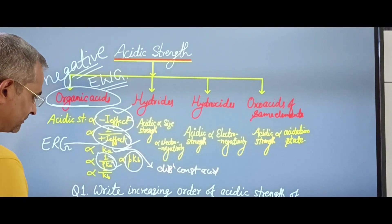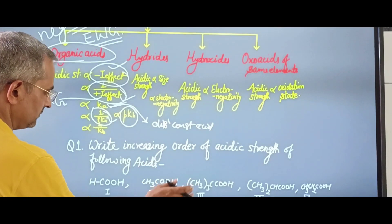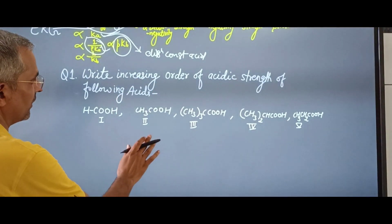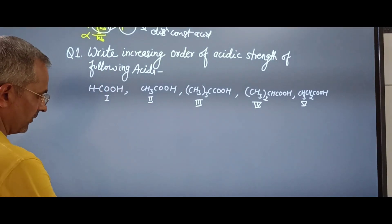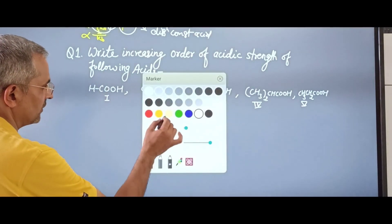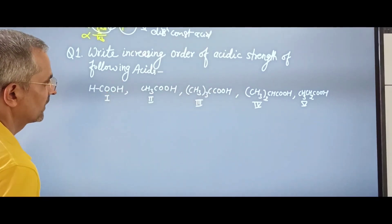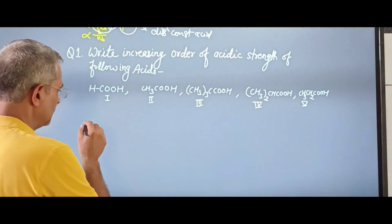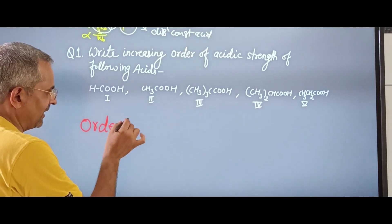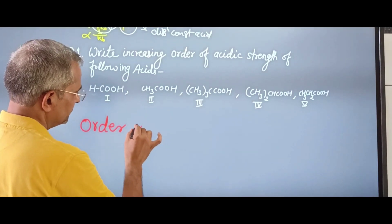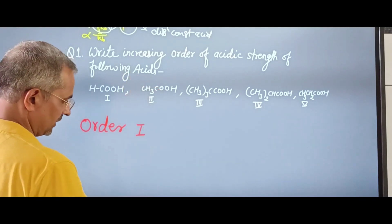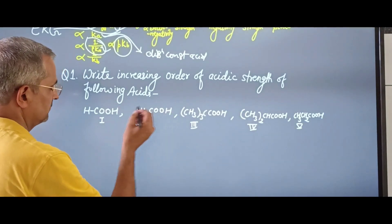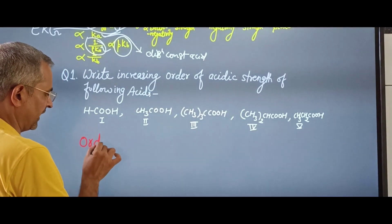Now let us look at questions. The first question asks: write the increasing order of acidic strength of the following acids. Let us work through this step by step to determine the correct order.